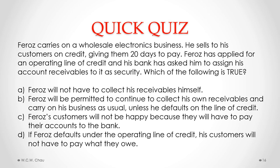Quiz question: Pharaoh's carries on a wholesale electronics business, selling to customers on credit with 20 days to pay. Pharaoh's has applied for an operating line of credit, and his bank has asked him to assign his accounts receivables to it as security. Which of the following is true? The answer is B: Pharaoh's will be permitted to continue to collect his own receivables and carry on business as usual, unless he defaults on the line of credit.